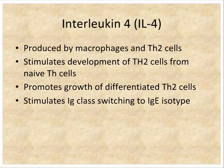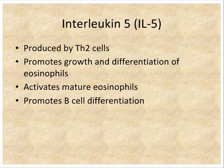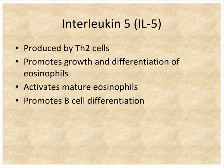Interleukin-4 is produced by macrophages and is the cytokine that drives differentiation toward the TH2 phenotype. It's also produced by TH2 cells and stimulates their proliferation. IL-4 has an effect on class switching and shifts the response toward an IgE response. IL-5 is another TH2 cytokine that promotes growth and differentiation of B cells and drives B cell differentiation into plasma cells.